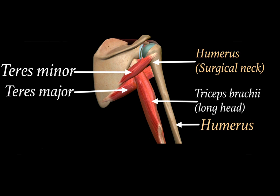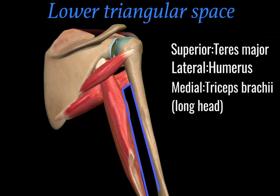Hence posteriorly we have teres minor, teres major, and long head of triceps brachii along with the humerus bone. The first intermuscular space is the lower triangular space, marked in blue color. As you can see in the figure, superiorly there lies teres major muscle, laterally we have the humerus bone, and medially we have the long head of triceps brachii.